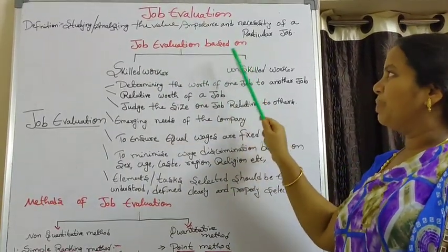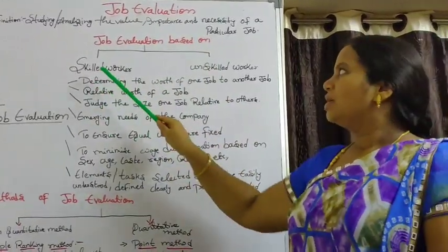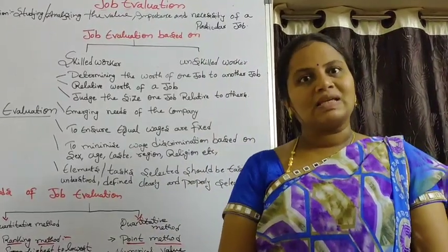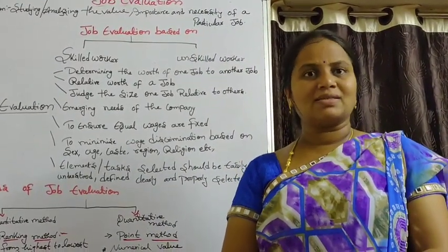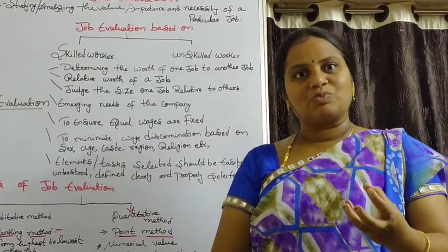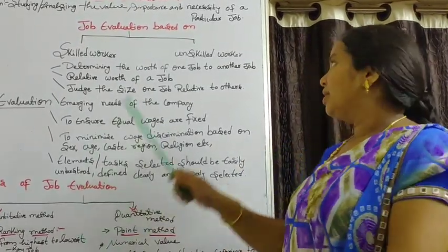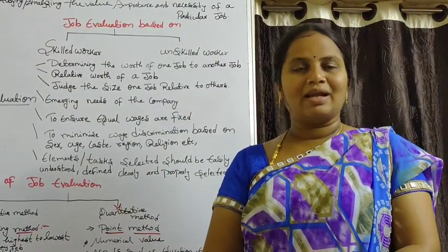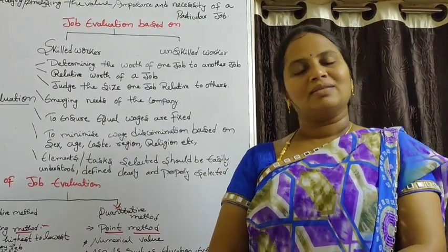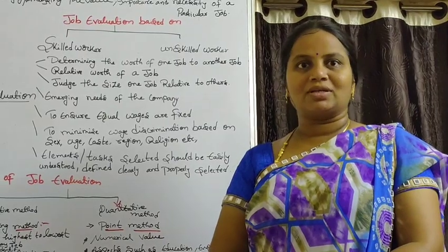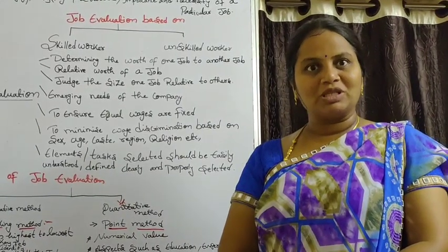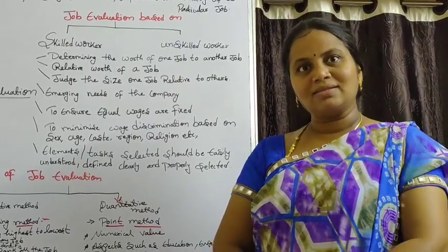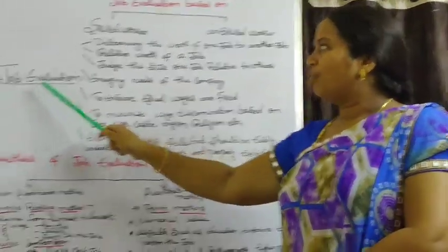Job evaluation is based on two factors: skilled worker and unskilled worker. Skilled worker means he has sufficient training and experience. Unskilled means sufficient training is not there and experience is also not there — that is called an unskilled worker. The organization has to be divided into two types: skilled worker and unskilled worker.